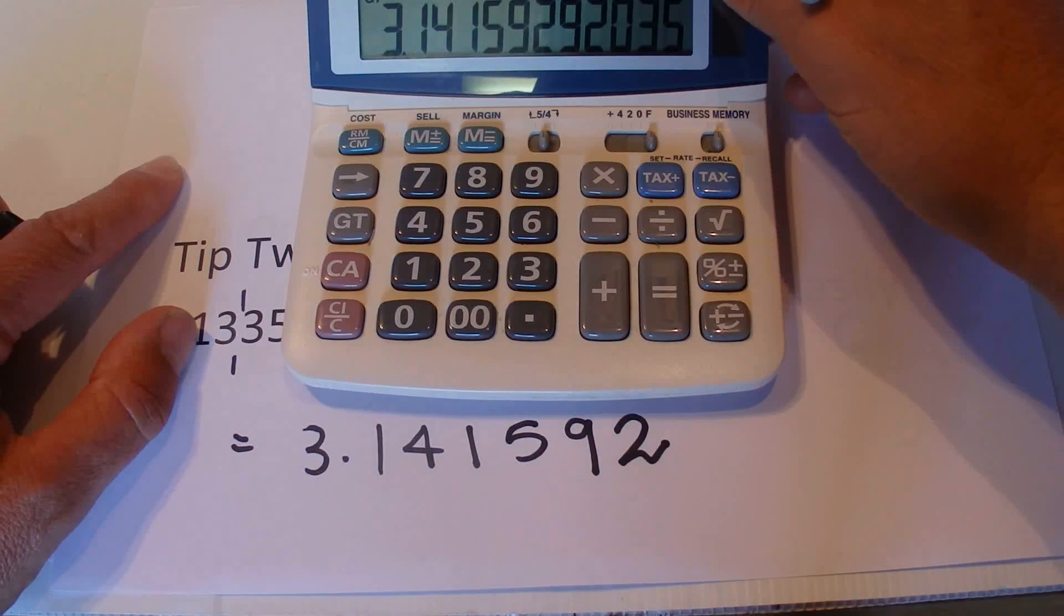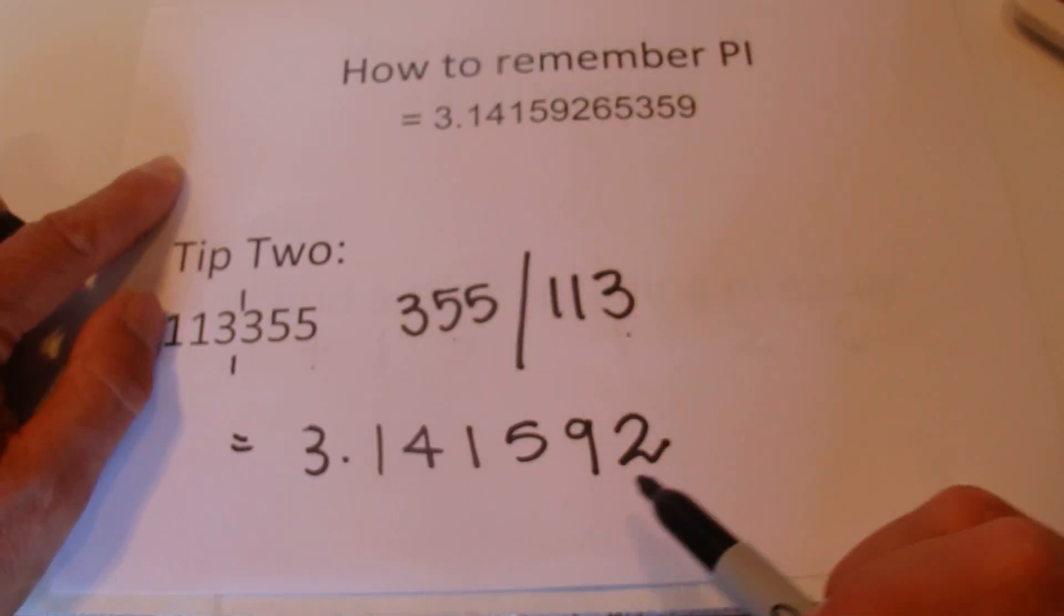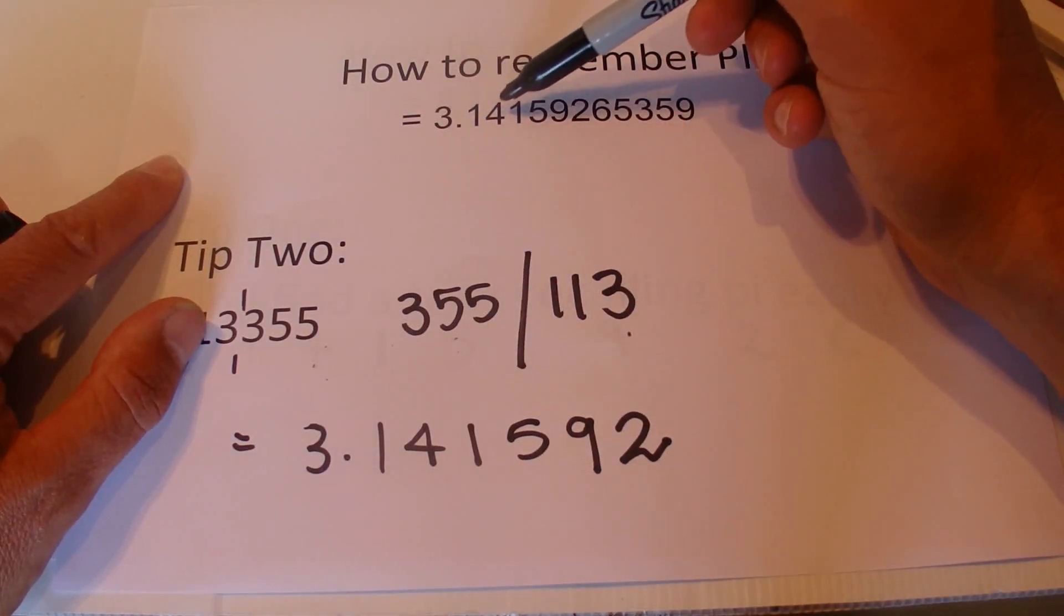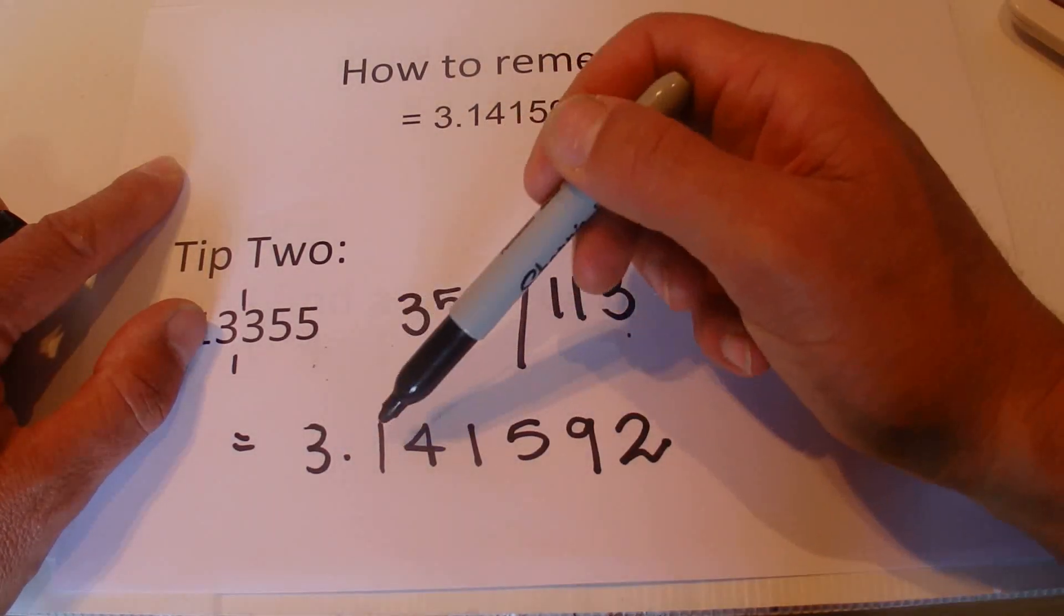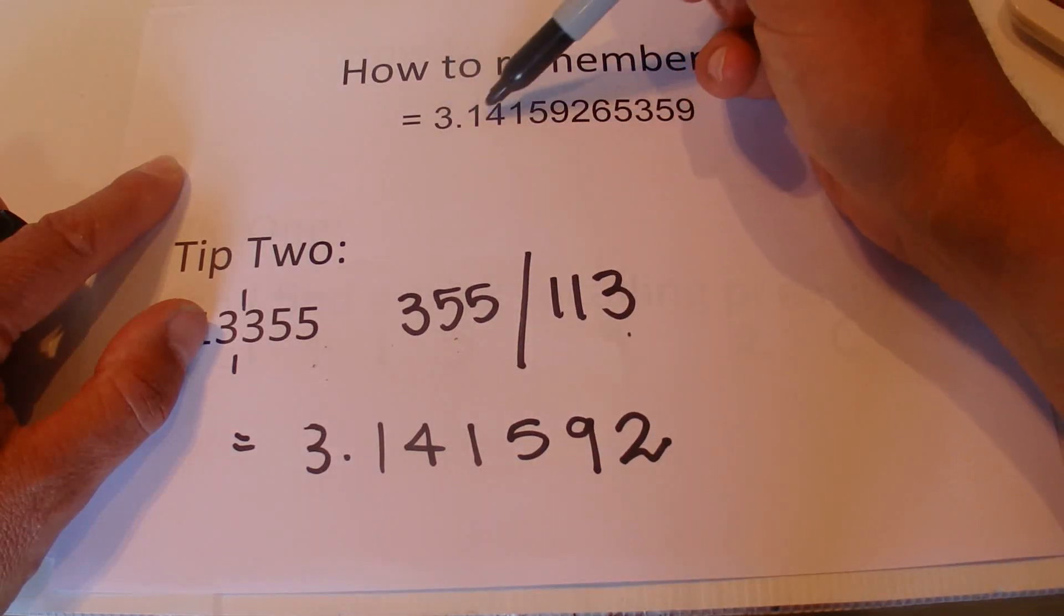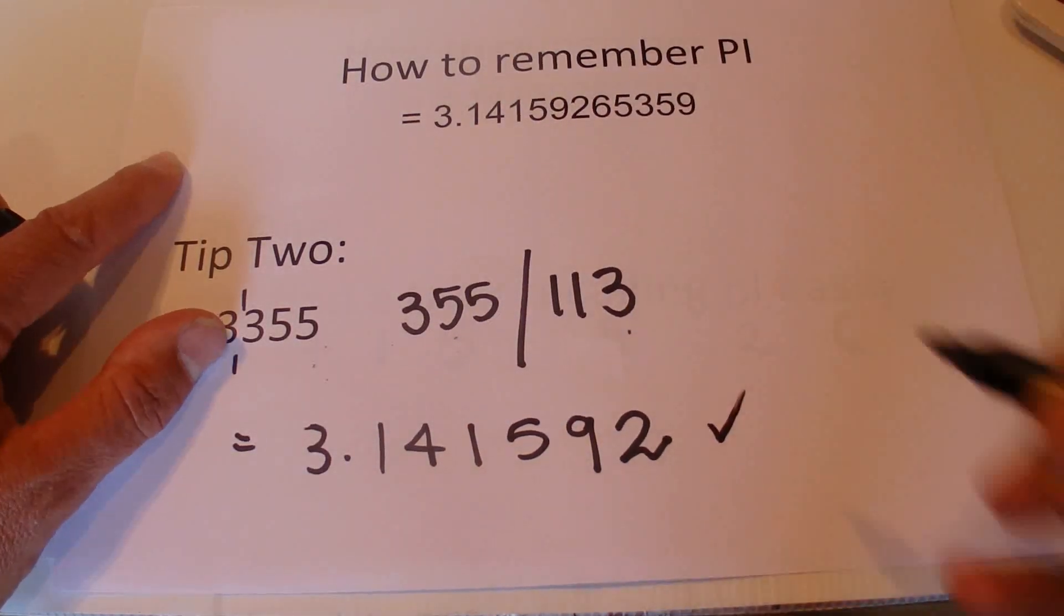That'll do to the first six decimal places and you can see that is accurate to six decimal places: 3.141592. So that's two simple tips to help you remember one or the other to help you remember pi.